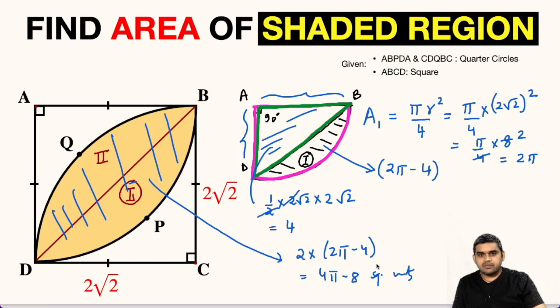If we substitute the value of pi here, in decimals we will get the area as 4.567 square units.